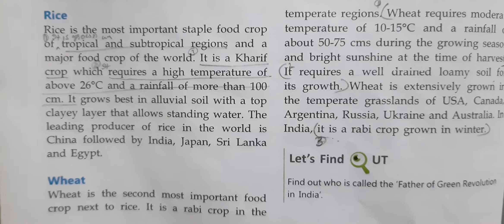Jo chawal hai, bohot important kheti hai — anaj hai jo tropical ya subtropical regions mein ugaya jata hai. Ye kharif ki kheti hoti hai jisme 26 degree Celsius temperature aur 100 centimeter se zyada rainfall chahiye. Alluvial soil mein ye best ugta hai jisme pani khadha rehta hai. Chawal ka utpadan duniya mein sabse zyada China karta hai, aur India, Japan, Sri Lanka aur Egypt bhi ismein aage hain.